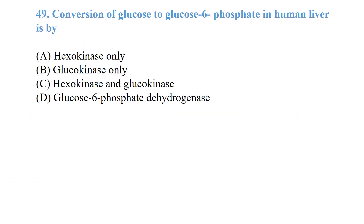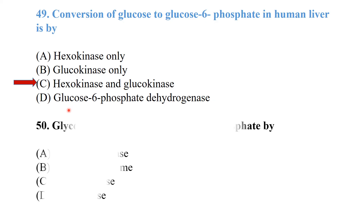Conversion of glucose to glucose-6-phosphate in human liver is by the enzymes hexokinase or glucokinase — both hexokinase and glucokinase convert glucose to glucose-6-phosphate.